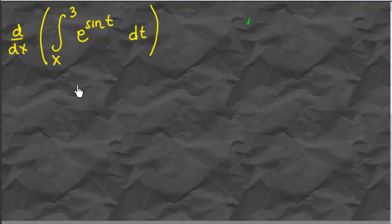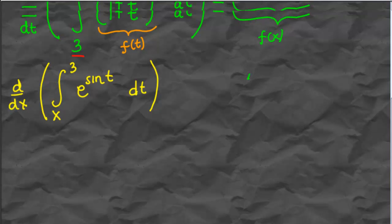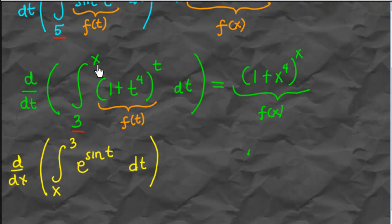Now look at the next example. Our function is defined by the integral from x to 3. What is the difference between this example and the previous ones? Here the lower limit of the integral is x, whereas in the previous examples, x was in the upper limit. So what is the difference then?